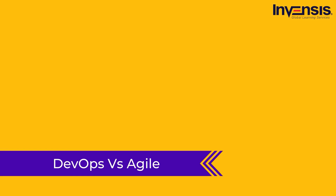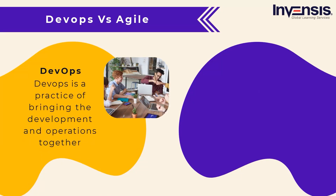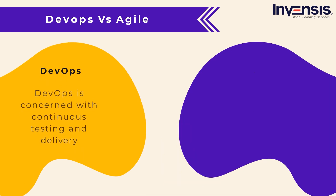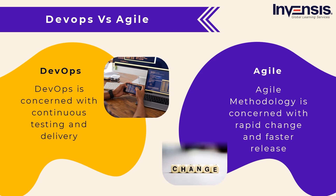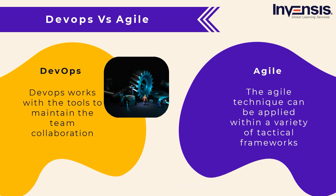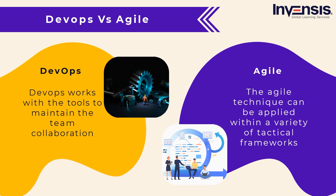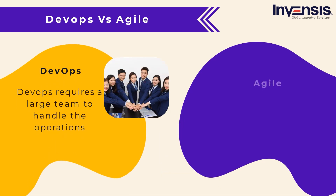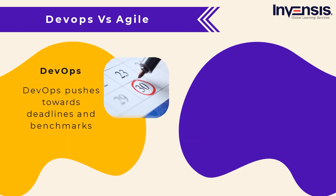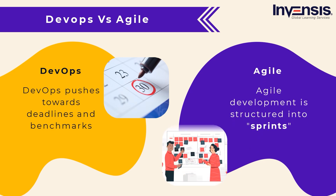Now let us start with the differences between DevOps and Agile. DevOps is a practice of bringing development and operations together, whereas Agile is an iterative strategy that emphasizes collaboration, customer feedback, and small rapid releases. DevOps is concerned with continuous testing and delivery, whereas Agile methodology is concerned with rapid change. DevOps works with tools to maintain team collaboration, while the Agile technique can be applied within a variety of tactical frameworks. DevOps requires a large team to handle operations, while Agile requires a small team. With major releases, DevOps pushes towards deadlines and benchmarks, with the ideal goal of sending code to production daily or weekly, but Agile development is structured into sprints — each sprint is substantially less than a month.